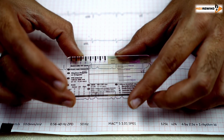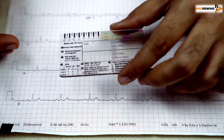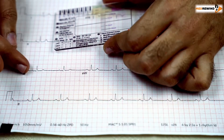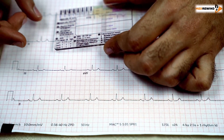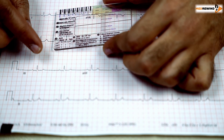The fourth step is the axis. For the axis, you need to check leads 1, 2, and 3 to see whether the wave is positive — whether the QRS complex is positive or not. This is normal.